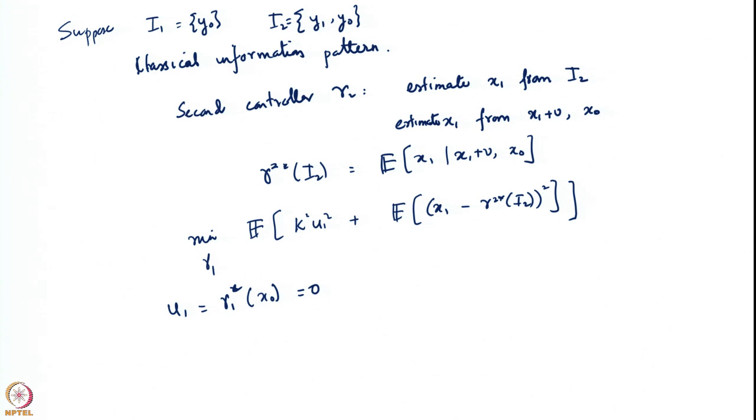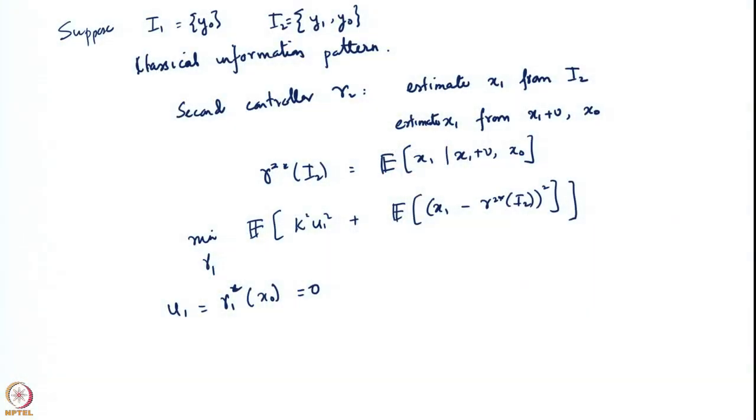Notice that this is different from the earlier approach — in the earlier assumption we did not have any cost on u1. What γ1 did there was he was trying to cancel out the effect of x0, making x1 independent of x0. Whereas here he is choosing u1 to be 0, so x1 is still going to be dependent on x0. But that is not a problem because x0 is now known to the second controller.